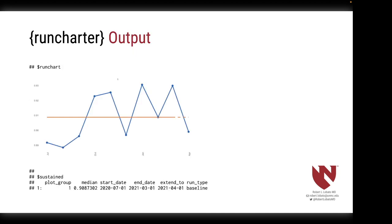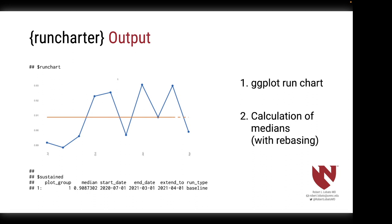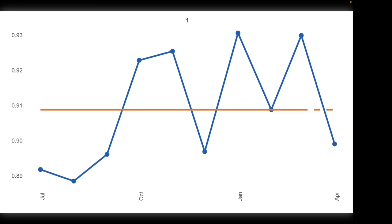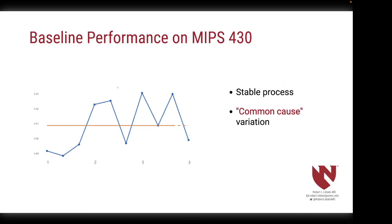This is what the default run charter output looks like. It has two components: first, a ggplot run chart; second, a calculation of medians for each interval of interest with rebasing. Run charter does a very nice job by default of generating an attractive plot. It recognizes that our time intervals were in date-time format and labels them appropriately, and gives us a nice y-axis scale with a reasonable number of significant digits. This is our institution's baseline performance on MIPS — a relatively stable process marked by what those in statistical process control would call common cause variation, meaning small differences in patients, locations, and provider practice patterns that cause fluctuations above and below the baseline.